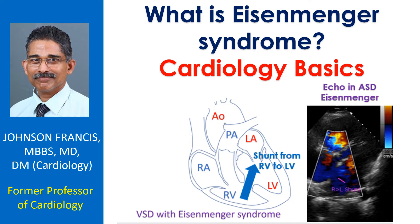Eisenmenger syndrome is a condition in which long-standing high pulmonary blood flow leads to irreversible pulmonary hypertension with reversal of shunt. Right-to-left shunt causes reduced systemic oxygen saturation with cyanosis.